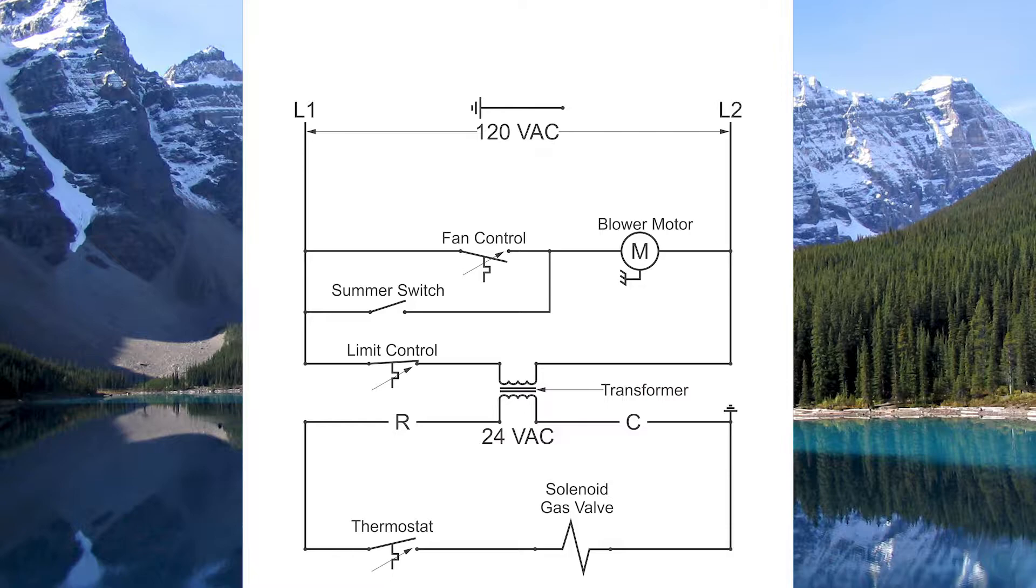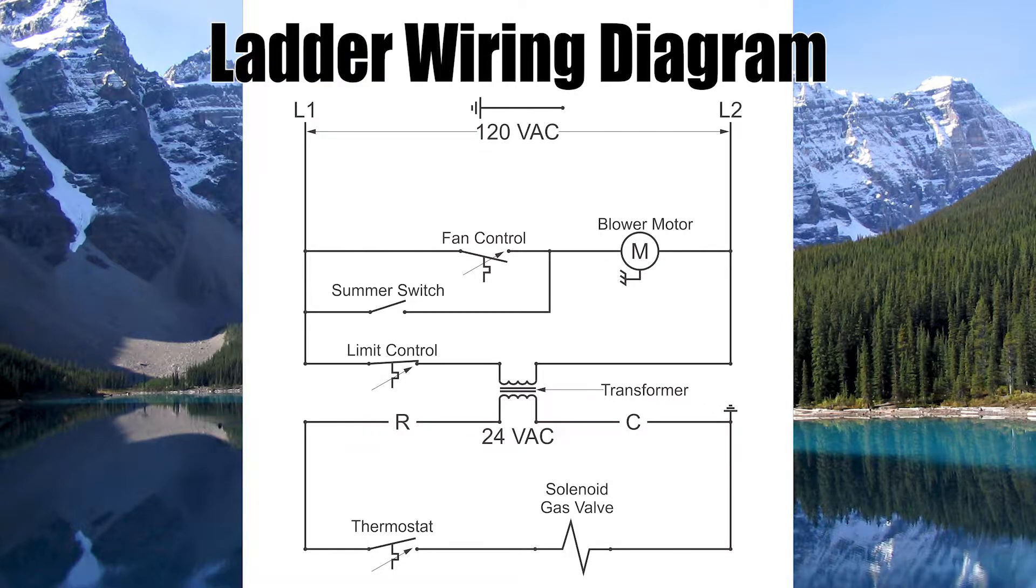The third type of diagram is called a ladder diagram. Now this one doesn't show you a scale representation of how things are laid out in the system. It shows you an electrical schematic using electrical symbols to identify how things are wired together in order of operation.